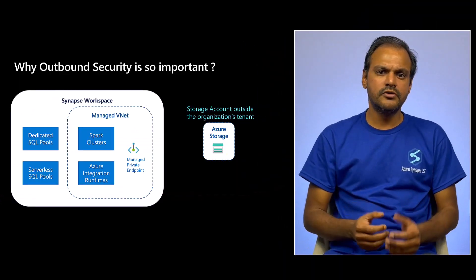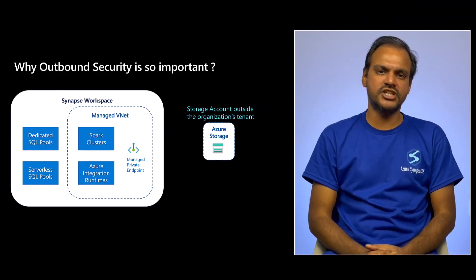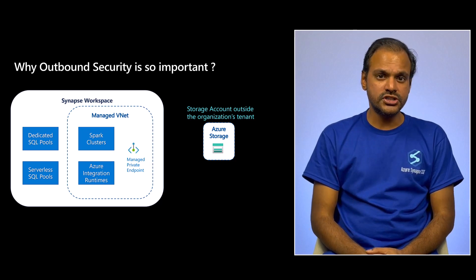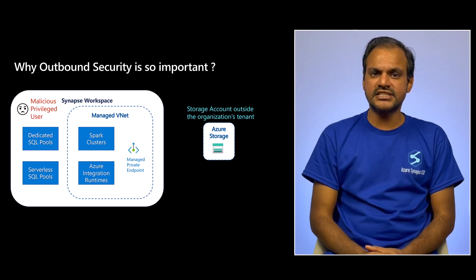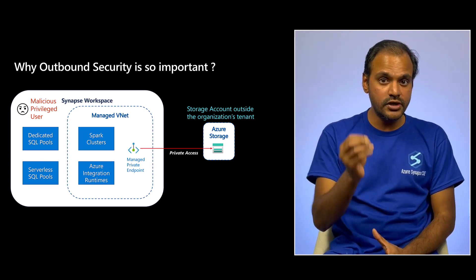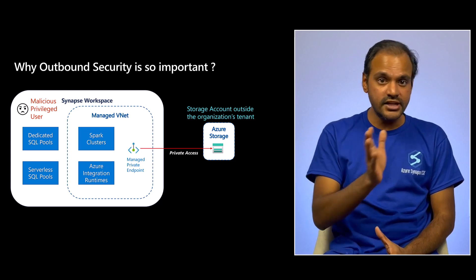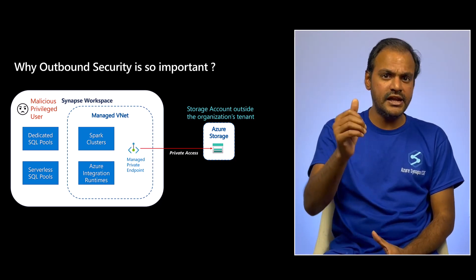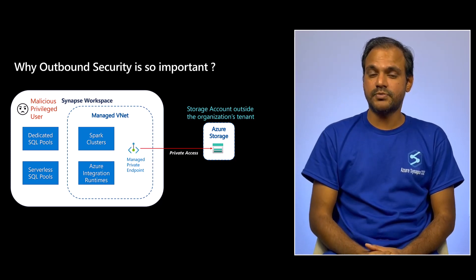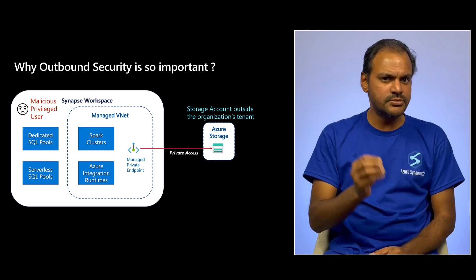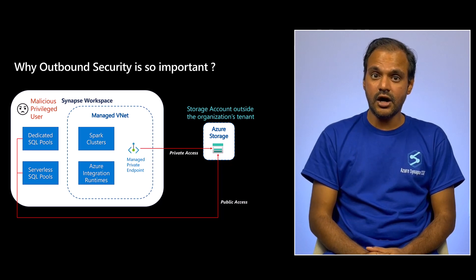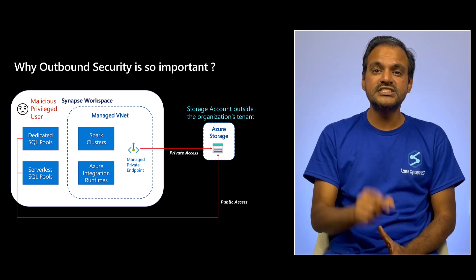So far we saw some basics for outbound connectivity from Synapse. Now let's talk about why outbound security is so important. A privileged user such as a Synapse contributor with access to linked services can potentially create a new linked service to their own storage account outside the organization, and copy data from any existing data sources in Synapse to their own storage account using Synapse pipelines or Spark notebooks. Similarly, a privileged user on a Synapse SQL engine can write data out to their own external storage using the CETAS command.